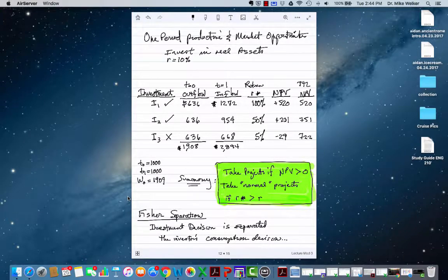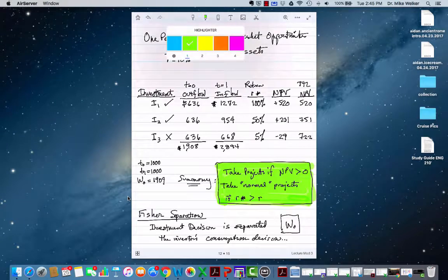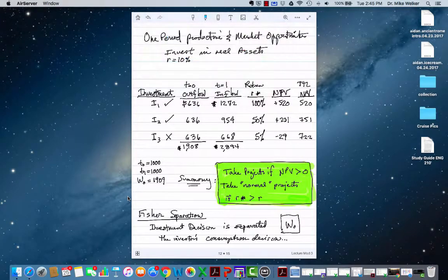This is the Fisher separation, named for Irving Fisher, famous economist. To summarize, what do financial managers do for their shareholders? We want them to maximize their wealth, and in our terms we're saying this is w sub zero. That's really all we want to do.